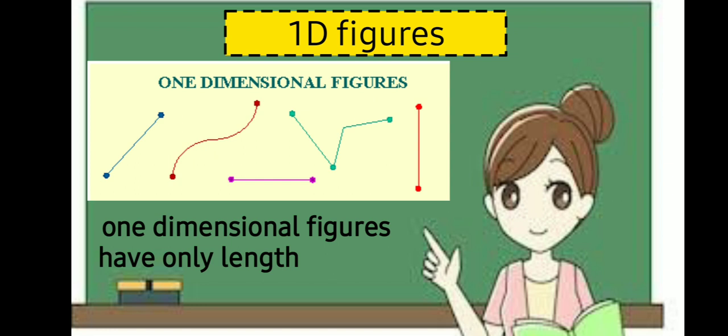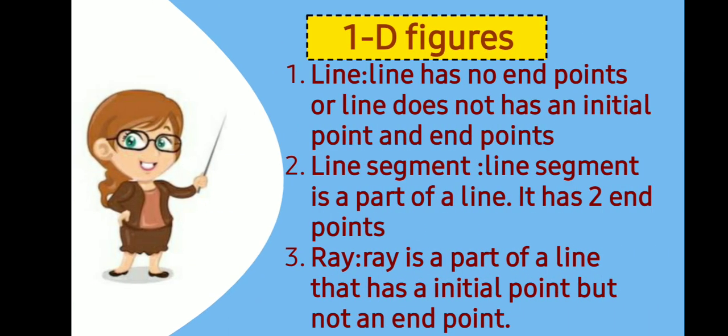The next one is about 1D figures. What are 1D figures? They have only one direction — only length. So 1 dimensional figures have only length. Those types of figures are called 1 dimensional figures.